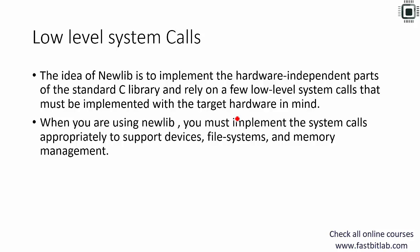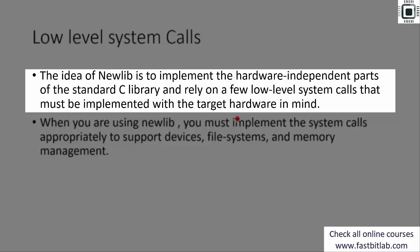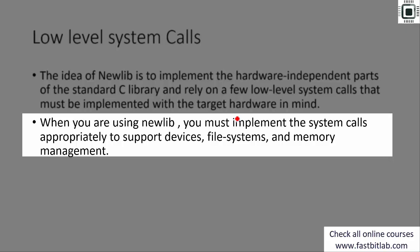Let's talk about what we need to do for this project to link successfully with the C standard library. We should take care of low-level system calls. The idea of NewLib is to implement the hardware-independent parts of the standard C library and rely on a few low-level system calls that must be implemented with the target hardware in mind. That means NewLib doesn't provide low-level system calls operating on hardware units — you have to provide them. When using NewLib, you must implement system calls appropriately to support devices, file system, and memory management.